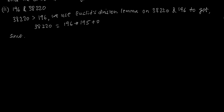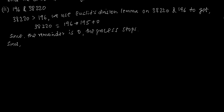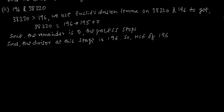Since the remainder is 0, the process stops. The divisor at this stage is 196, so the HCF of 196 and 38,220 is 196.